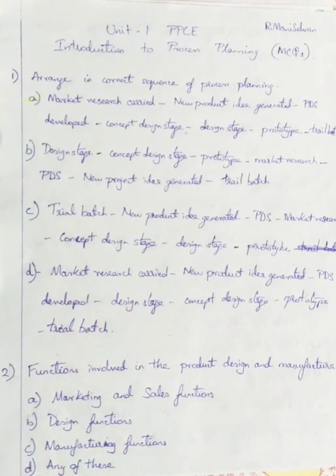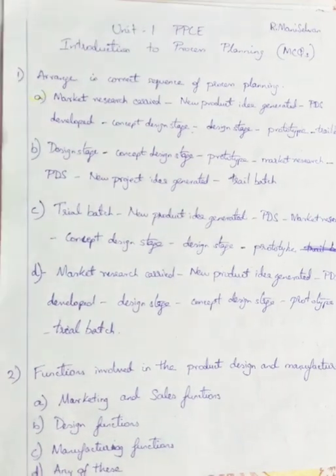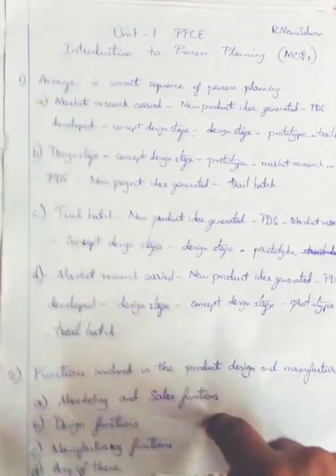Option A is correct. Because Market Research is first carried out, then New Product Idea is generated, then PDS is developed, followed by Concept Design Stage, Design Stage, Prototype, and Trial Batch. So Option A is right.